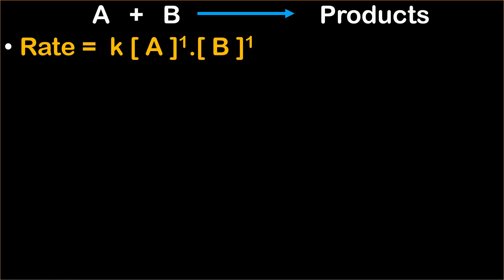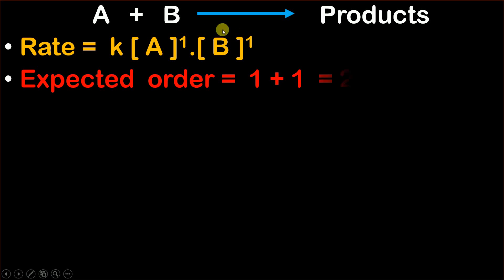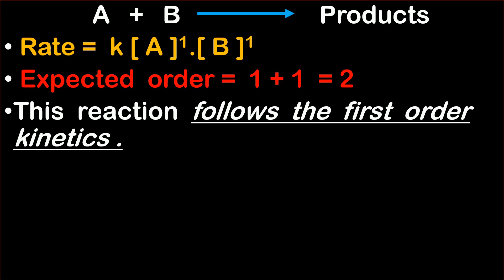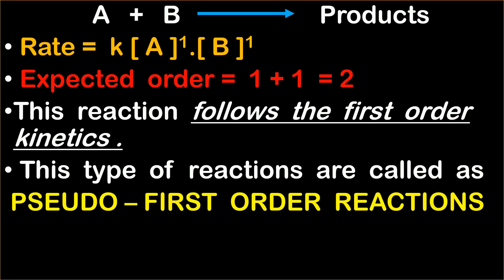Now what is the order of the reaction? Order is nothing but the sum of the powers, so order equals 1 plus 1 which gives us 2. So this reaction is a second order reaction. But what we observe is that this reaction follows first order kinetics — it behaves like a first order reaction. And these types of reactions are called pseudo first order reactions. Any reaction which has an order greater than 1 but behaves like a first order reaction is called a pseudo first order reaction.